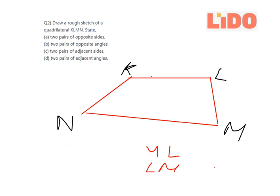Part C is two pair of adjacent sides. So the two pair of adjacent sides, the first pair is... Okay, just a second. I'll use another color again. First pair is KN, KL and the second pair guys is NM, ML.